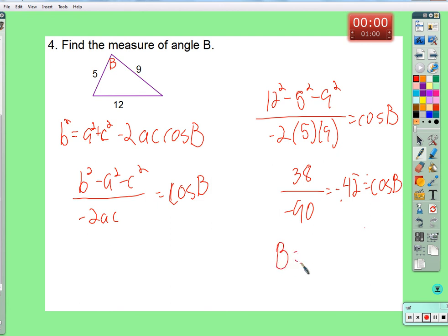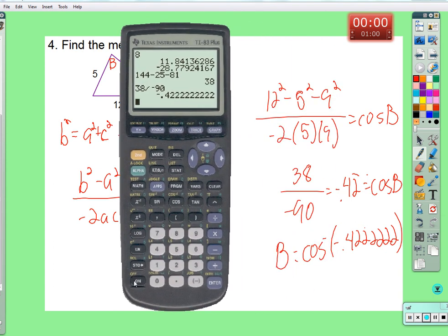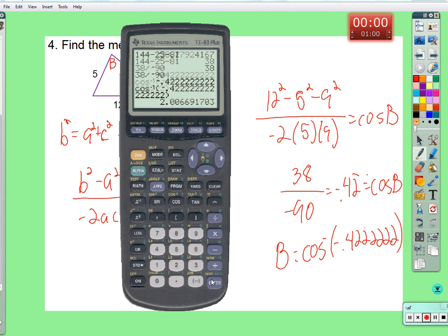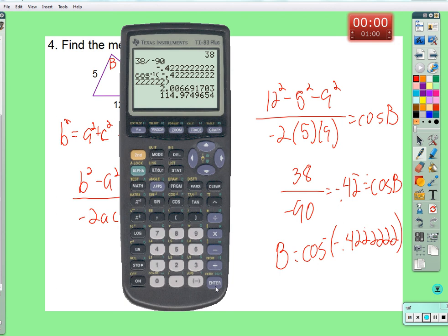So how do we find B? Inverse cosine. Inverse cosine of negative 0.42222. 114.97 degrees.